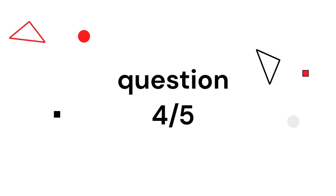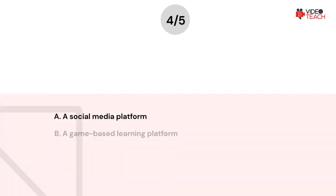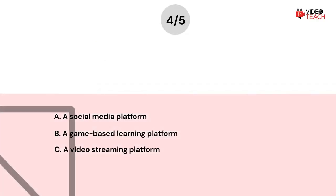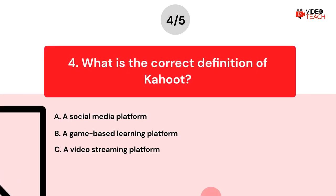Question number four. What is the correct definition of Kahoot? Option A: A social media platform. Option B: A game-based learning platform. Option C: A video streaming platform.